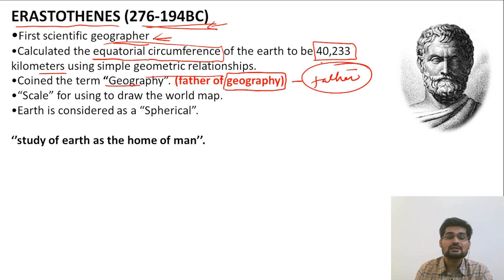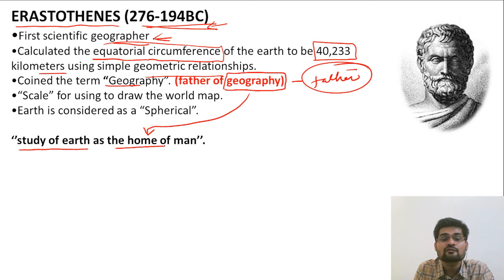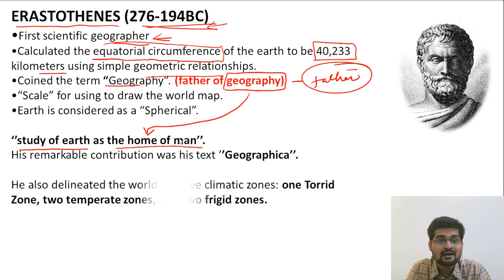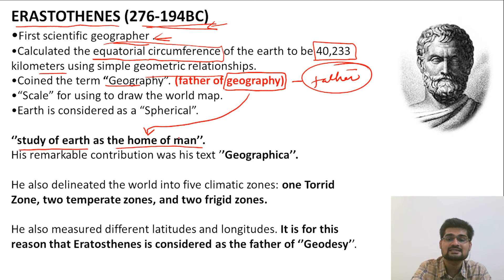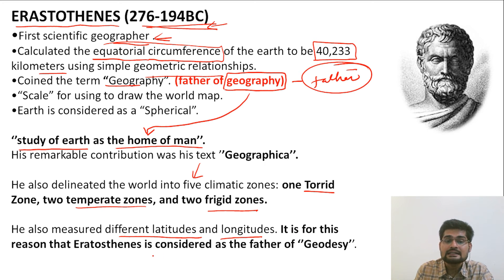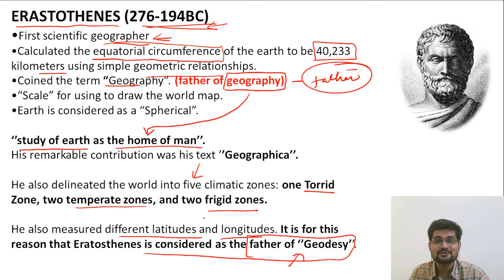Eratosthenes emphasized the concept of scale for drawing the world map and the importance of spherical earth. His first definition of geography was that it was a study of the earth as a home of man. His remarkable contribution was his great book Geographica. He also delineated the world into five climatic zones: one torrid zone, two temperate zones, and two frigid zones. He measured different latitudes and longitudes and is also considered the father of geodesy.